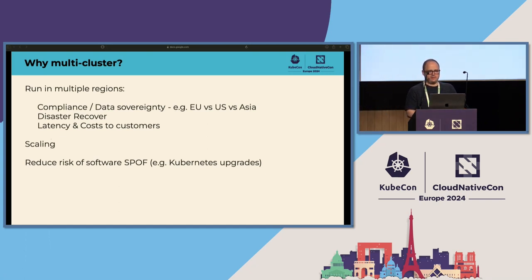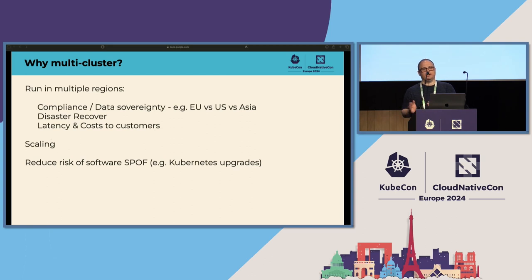Why would we want to step outside the happy place of a single cluster that we've spent 10 years optimizing? The biggest restriction in Kubernetes is that it's really designed to run in a single region. One cluster runs in one zone, one region. Many businesses need to run in multiple regions — maybe for compliance, to tolerate regional outages, or because customers are spread around the world and latency-sensitive.